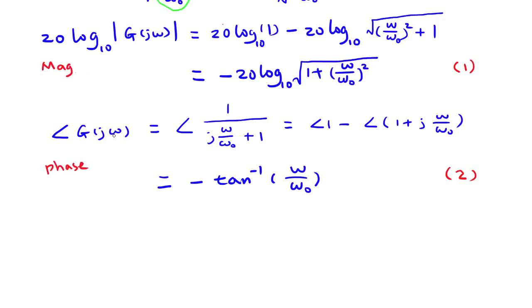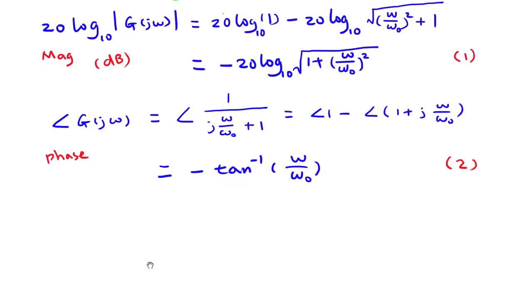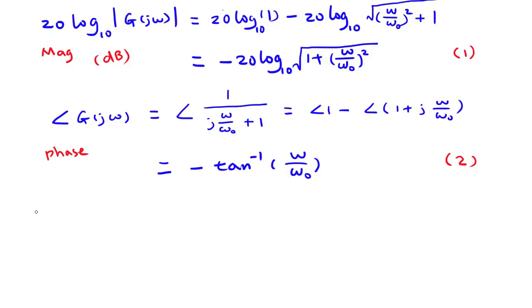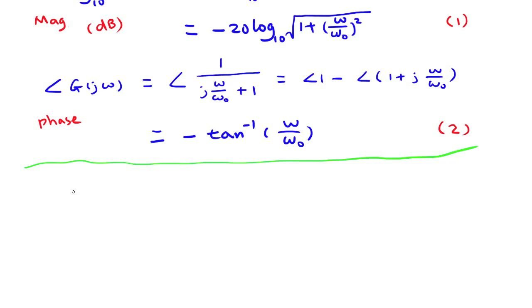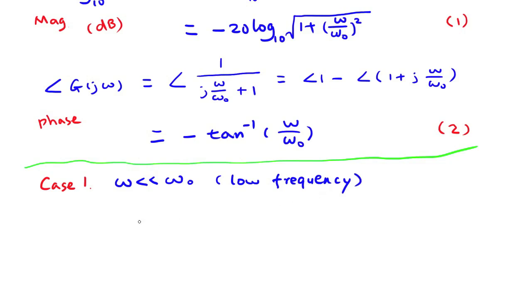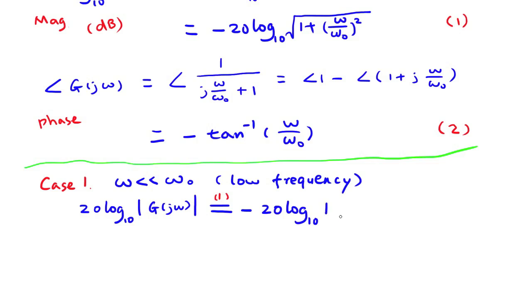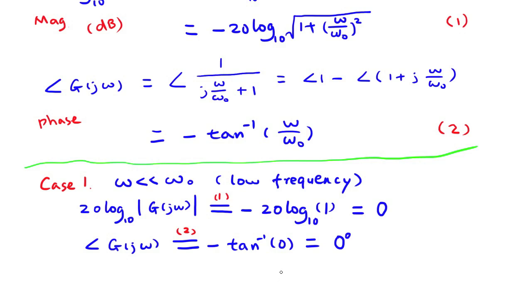Let's look at several cases depending on the ratio of excitation frequency to break frequency. Case 1: when excitation frequency omega is much smaller than the break frequency omega_0, the decibel gain asymptote can be found. Plugging omega/omega_0 close to 0 into equation 1, the gain equals 0 dB. And plugging into equation 2, the phase shift is also equal to 0.